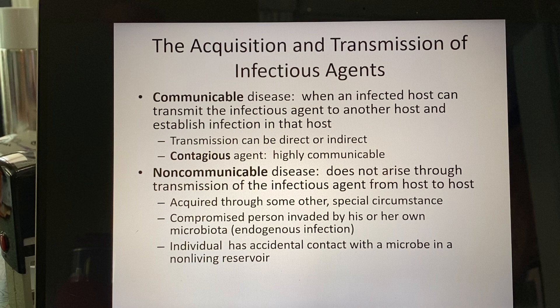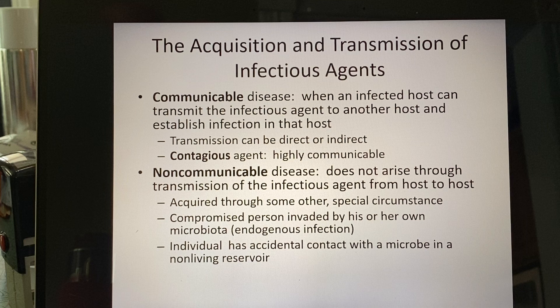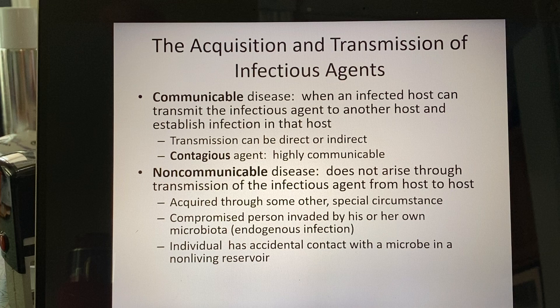The ending of this lecture from here on is talking about epidemiology. So let's talk about a couple of definitions. A communicable disease is when an infected host can transmit the pathogen to another host and the pathogen can then establish infection in that host, given that there's a high enough infectious dose and that that person is immunocompromised enough. A communicable disease can be passed from one person to another.